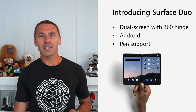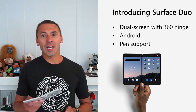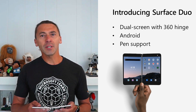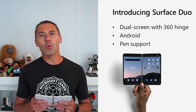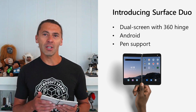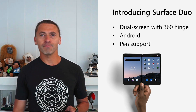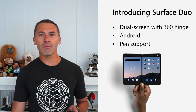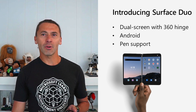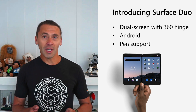Secondly, it's an Android device. You can get apps and games from Google Play and it comes pre-installed with all the Microsoft apps you'd expect, including Office, Outlook, Teams and more. Finally, like the rest of the Surface range, it also works great with pen input.